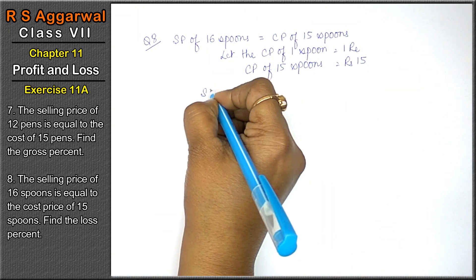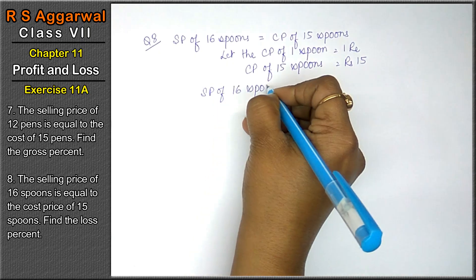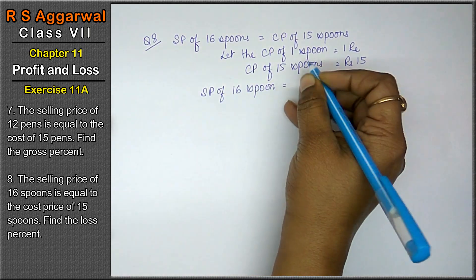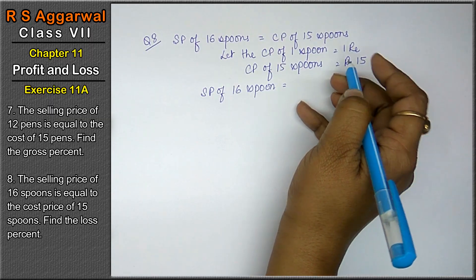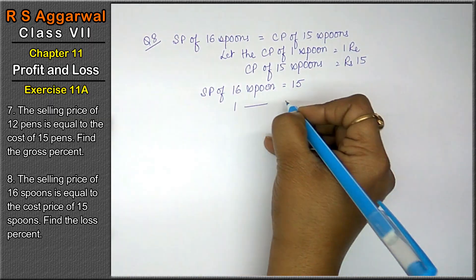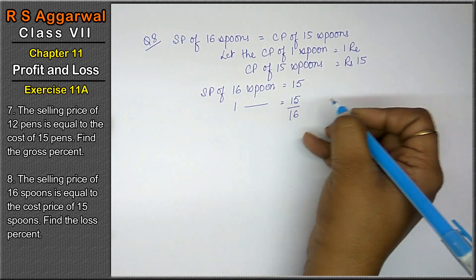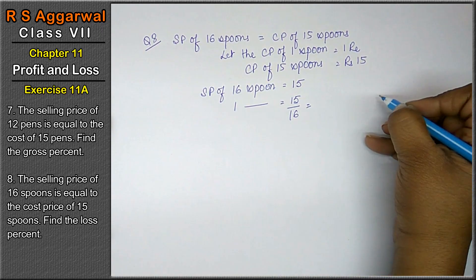So cost price of 15 spoons equals 15 rupees. Now SP of 16 spoons equals 15 rupees.